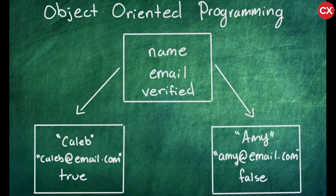So for example, the class has name, email, and verified, but we can make two examples of that where we have Caleb, his email, and true, he is verified. Or another example, Amy, Amy's email, and false, she's not verified. So these instances are known as objects, which is the foundation of object-oriented programming.